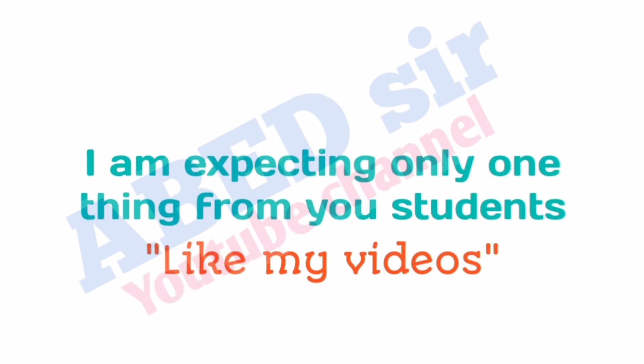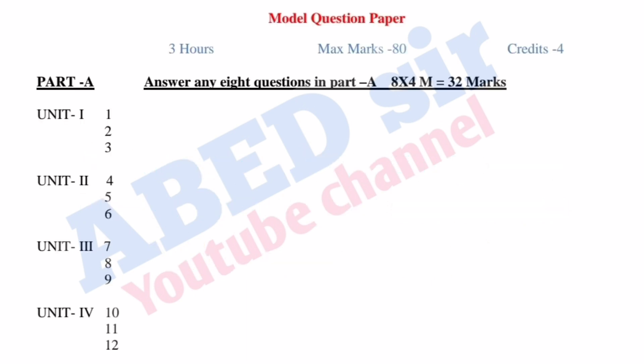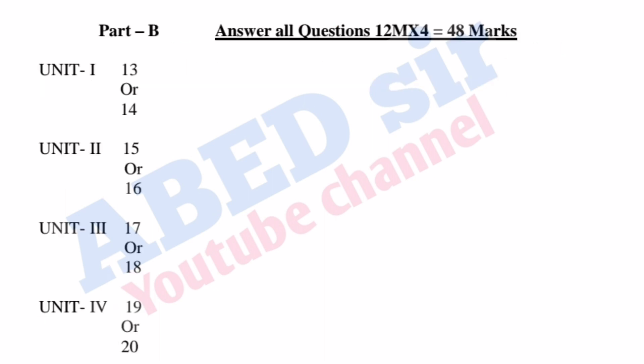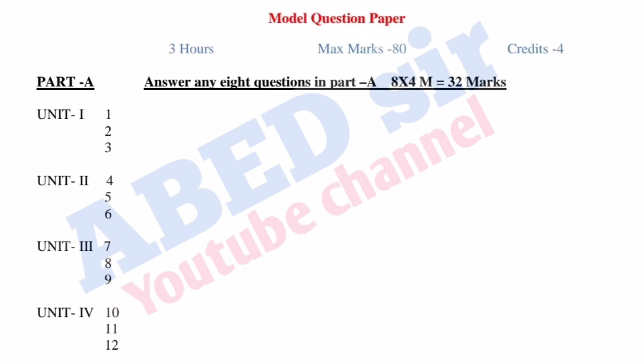Before these important questions, let me explain the question paper pattern for this subject. This question paper has two parts: Part A and Part B. In Part A, a total of 12 questions will be asked. Out of 12, you have to answer any 8, and each one carries 4 marks — so 8 times 4, that is 32 marks you will get from Part A.